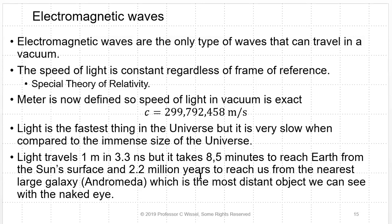The speed of light is constant regardless of the frame of reference — everybody, no matter how fast they are moving, measures the speed of light at a constant speed. This is the special theory of relativity, covered in Chapter 26. The meter is now defined so the speed of light in vacuum is exact, to nine digits. Light is the fastest thing in the universe, but it is extremely slow compared to the immense size of the universe. If you look at something one meter away, you're seeing it as it was 3.3 nanoseconds in the past; two meters away is 6.6 nanoseconds in the past.